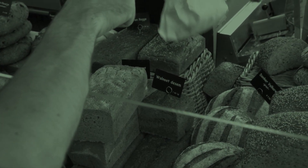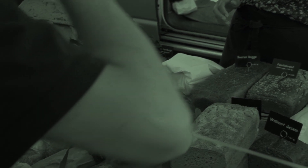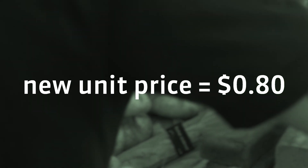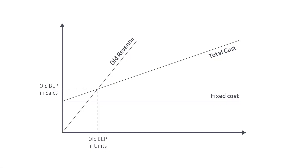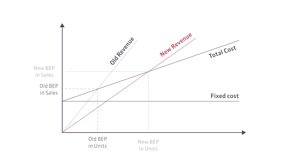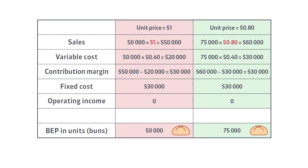Will a price change also affect the breakeven point? Suppose we lower the price of one bun from $1 to 80 cents. A lower price of the product will move the breakeven point to the right. It means that we will achieve it later, because its value in units and in sales is greater than before the change. In other words, we need to sell more units to reach the breakeven point.